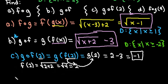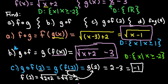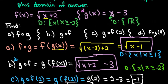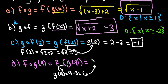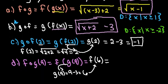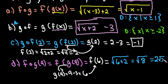The last one is f of g of 9. We first find g of 9: go to the g equation, replace x with 9 — so 9 minus 3 equals 6. Then we find f of 6: in the f equation, the square root of x plus 2, replace x with 6, giving the square root of 6 plus 2, which is the square root of 8. Simplifying: 8 equals 4 times 2, and the square root of 4 is 2, so this simplifies to 2 radical 2. It's best to leave it as an exact answer rather than an approximation.